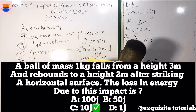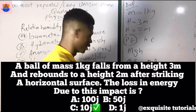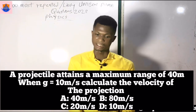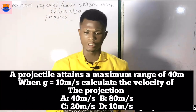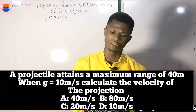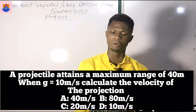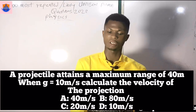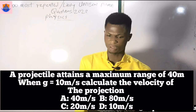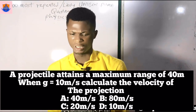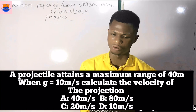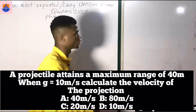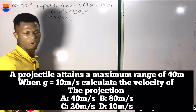Question 13: A projectile attains a maximum range of 40 meters when g = 10 m/s². Calculate the velocity of projection. Option A — 40 m/s, B — 80 m/s, C — 20 m/s, D — 10 m/s.